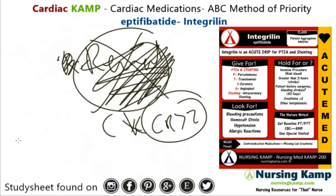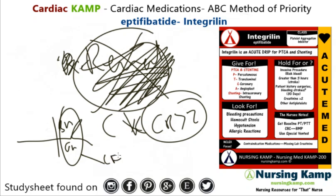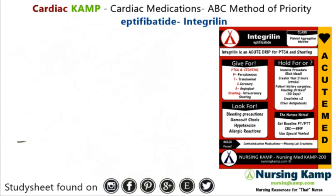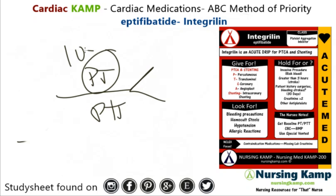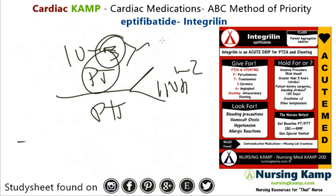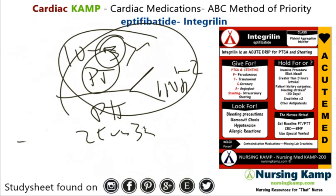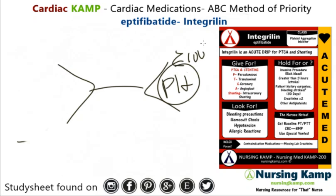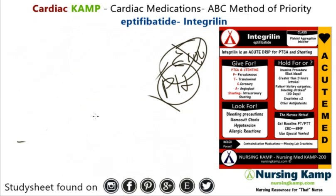If the creatinine is greater than 2, no Integrilin. Monitor BUN and creatinine, and check their GFR. Get a baseline PT — normally 10 to 13 — PTT of 25 to 35, and INR of 1 to 2. Also get a baseline CBC, mainly platelets. If platelets are less than 100, do not give Integrilin.